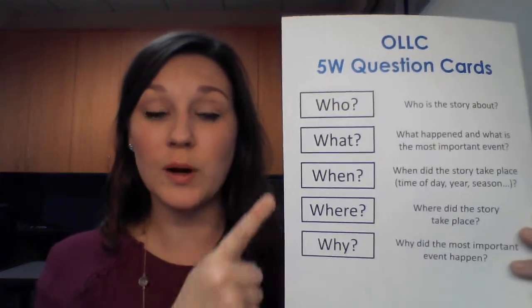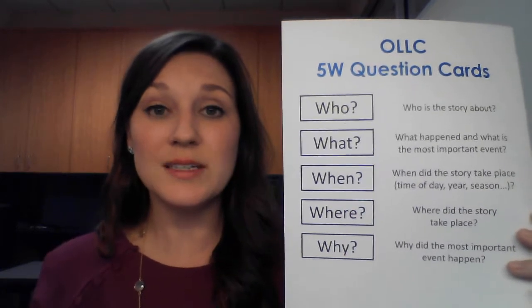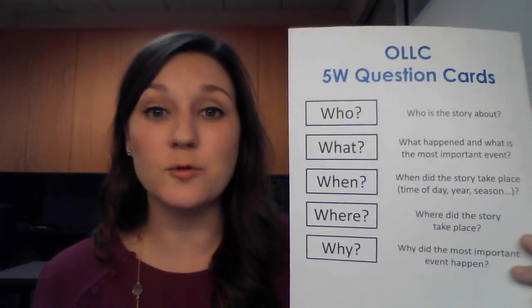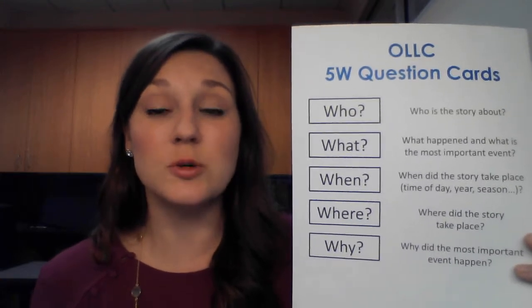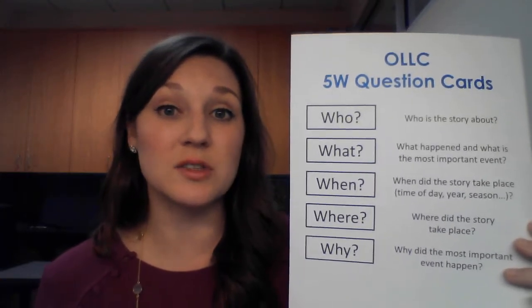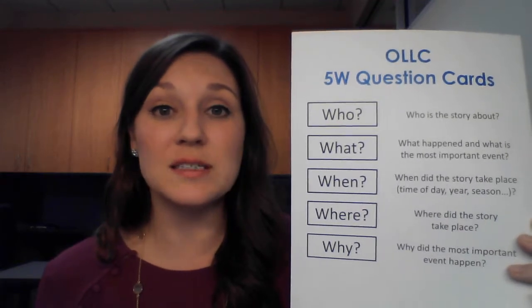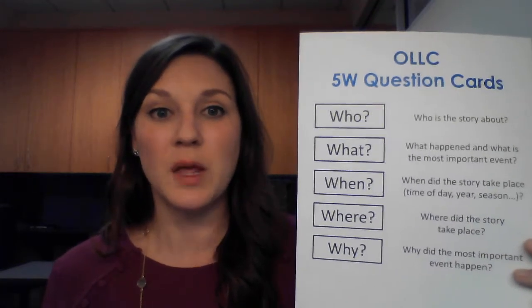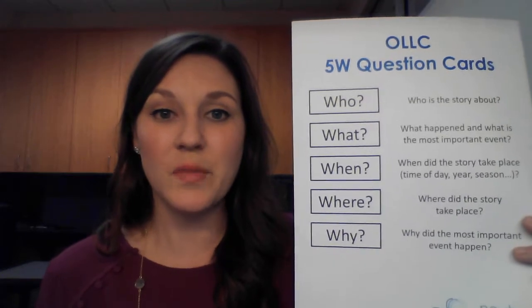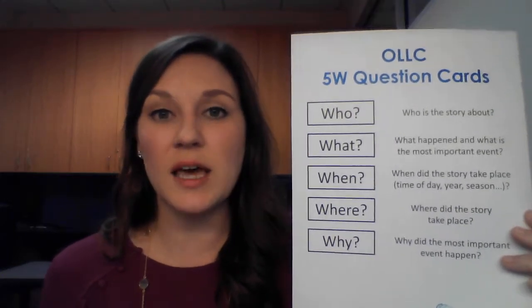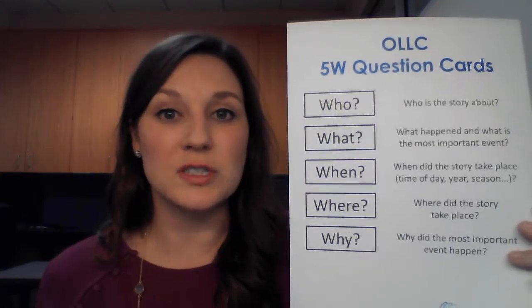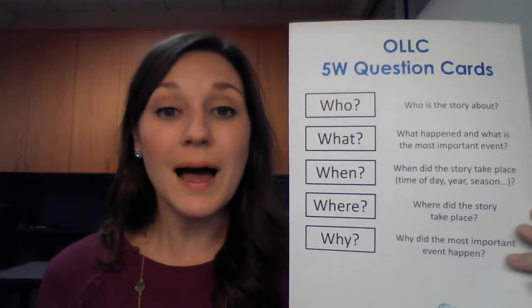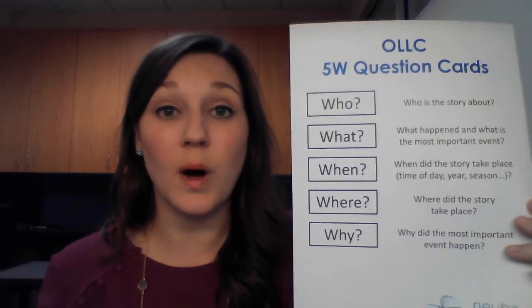In order to summarize or think about narrative text in our oral language and listening comprehension lessons, we're going to have students create five W cards: who, what, when, where, and why. The who identifies the characters. The what identifies the most important event — to identify this event, we have to think about how the story ends, the final resolution. If this most important event had not happened, the story would end differently. The where identifies the setting. The when identifies the time — the year, the season, a certain time in history. And the why identifies why the most important event, or the what, took place.